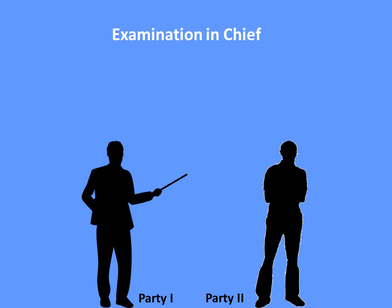Party One has gone to court saying that certain rights need to be protected which Party Two is trying to violate. Party Two is in denial mode, saying nothing of the sort has happened. When they come before the court, they each come with a story they try to convince the judge is the true story, and they want a favorable judgment based on that story.